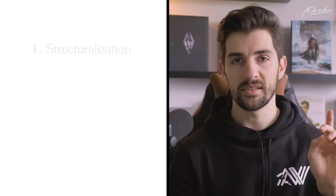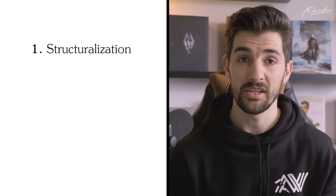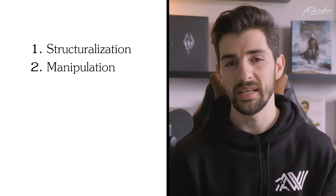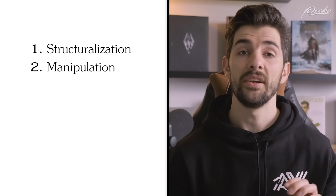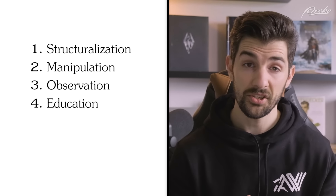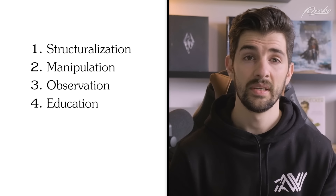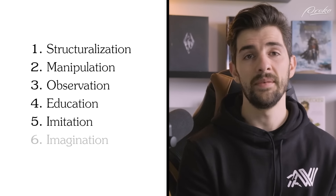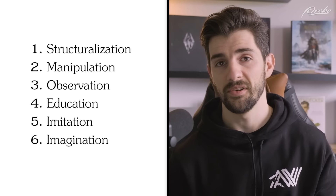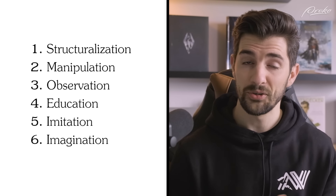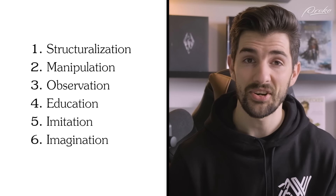If you can internalize complex ideas — things that you see — into more rudimentary yet complex shapes or mannequins, it gives you a nice tool to create your own things. So the six "Asian" process I want to talk about today: the first one is structuralization, the second is manipulation, then observation, education, imitation, and lastly, imagination. So without further ado, let's just get started.